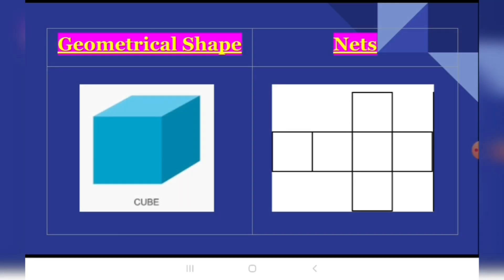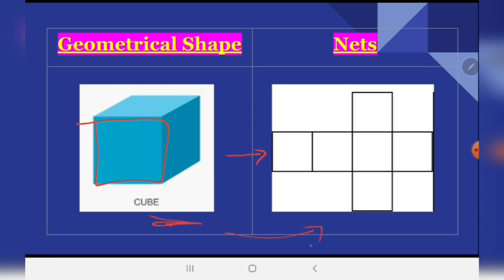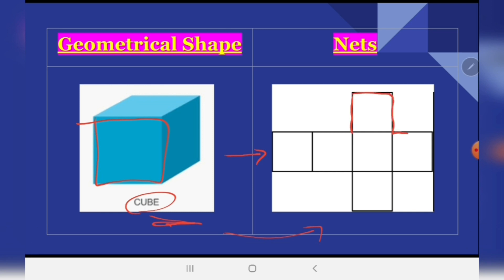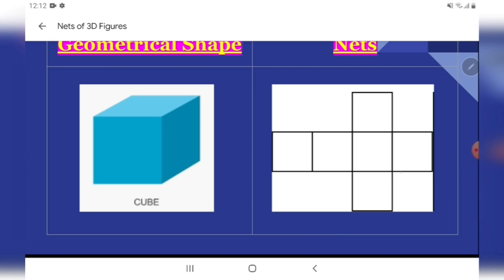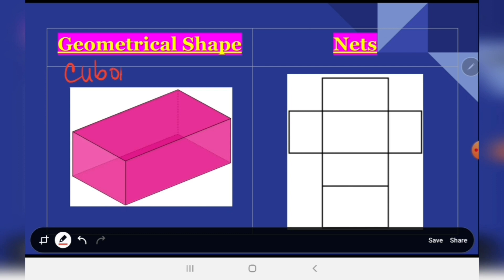For example, we have the cube. We know that a cube has six equal faces. This is now the net of a cube. Remember that in forming the net, it should be proportioned to the geometrical shape. Since the cube has six equal faces, we must draw six equal faces. After you draw six equal faces, you can cut then fold to form the cube.